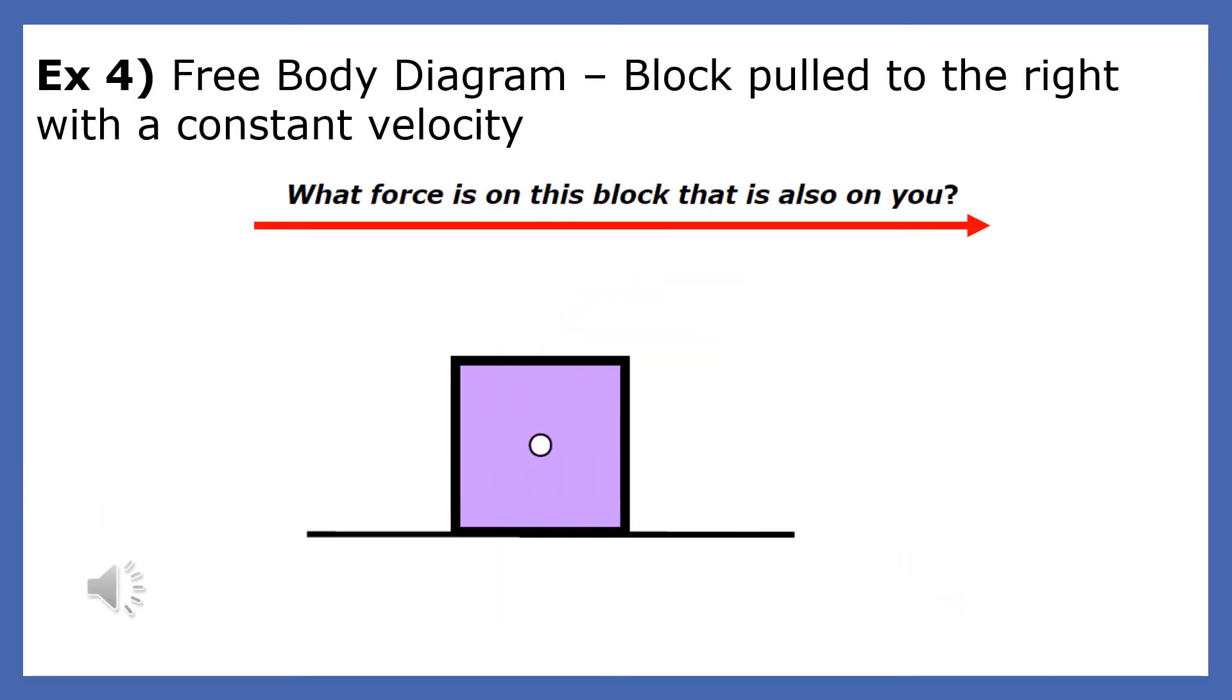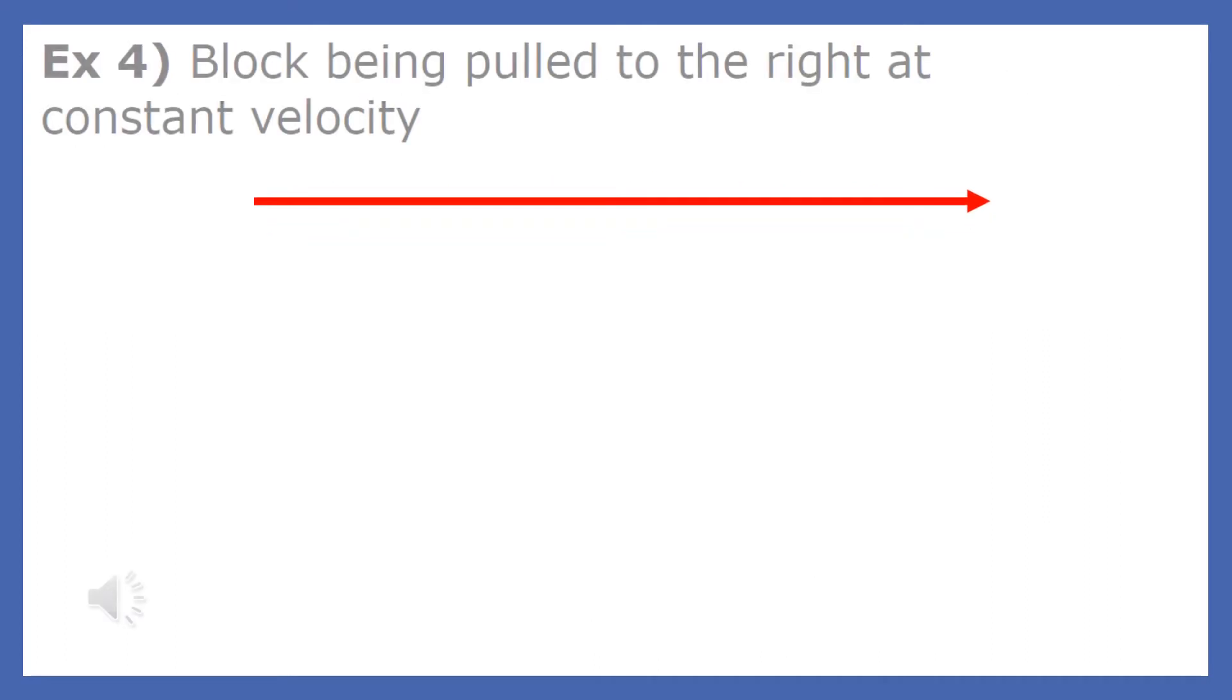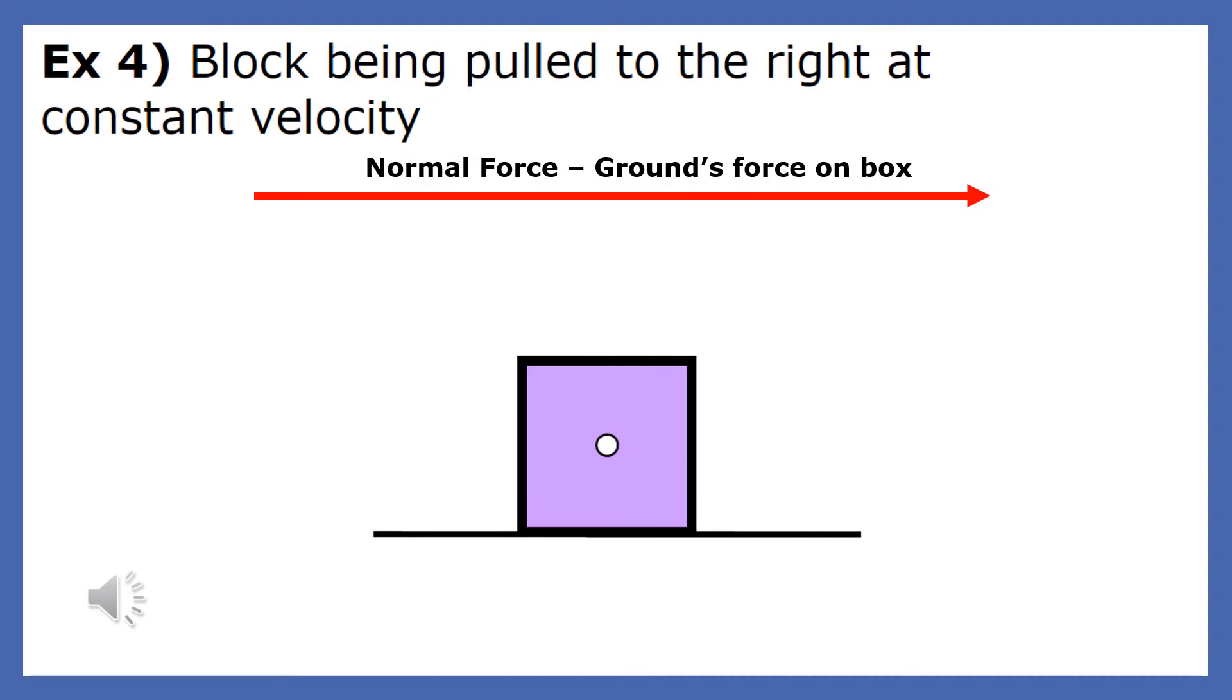Now we're going to do a free body diagram for a box being pulled to the right with constant velocity. What is the force on the body that's also acting on you now? That force of course is gravity. This vector is drawn from the center of the box and it points straight down. Next we will draw the normal force. The normal force is the upward supporting force of the floor on the box. Notice that the normal force is equal to the weight force because the box is moving on a horizontal surface.